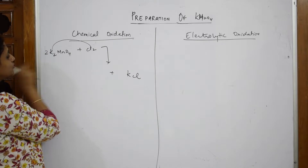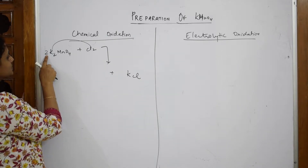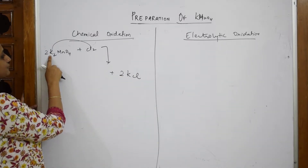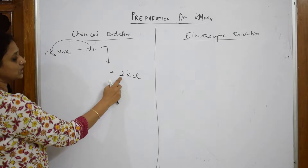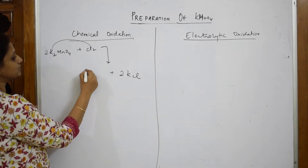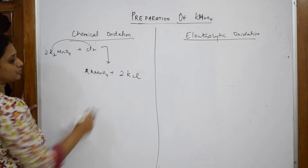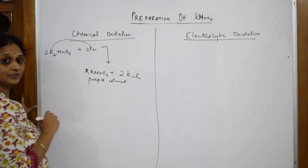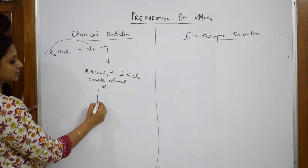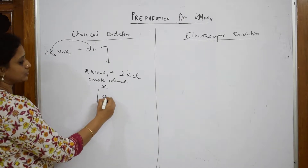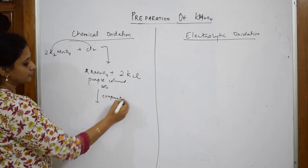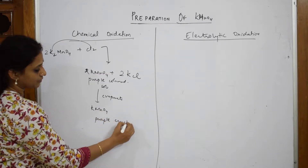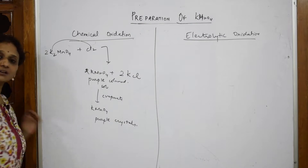I take 2 moles of K2MnO4, giving a total of 4 potassiums. The potassium with Cl comes out as 2KCl (potassium chloride). The leftover 2 potassiums precipitate out as 2KMnO4 — a purple colored solution. This is further evaporated to form purple crystals of KMnO4. This is how we prepare KMnO4 from chlorine gas.